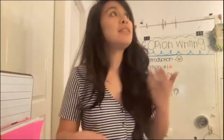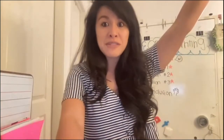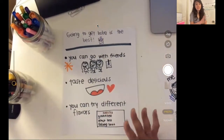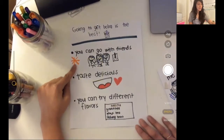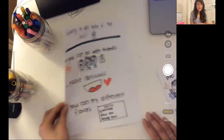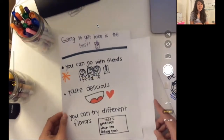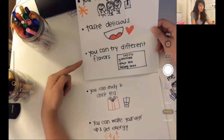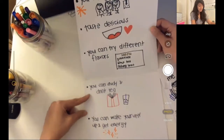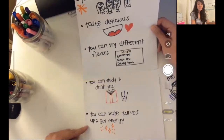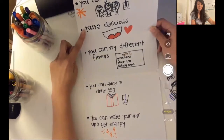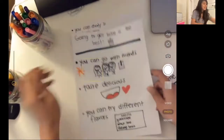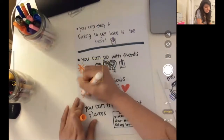Now I'm going to think of another reason — remember we got to brainstorm a bunch of different reasons. Here is my brainstorm list. I already added 'you can go with friends' to my book. Now I'm going to look at my other ideas and see which one is a really convincing reason. I wrote: it tastes delicious, you can try different flavors, you can study and drink tea, and you can wake yourself up and get energy. I really like this one — a lot of people would want to try something that's delicious. I'm going to put a star next to it.